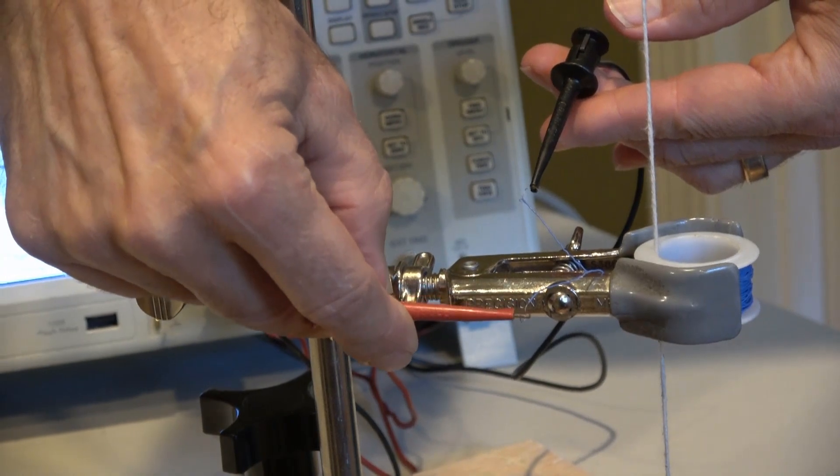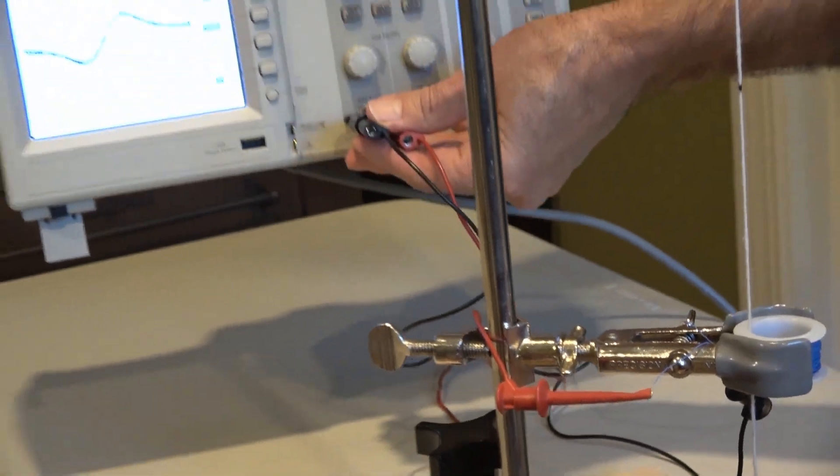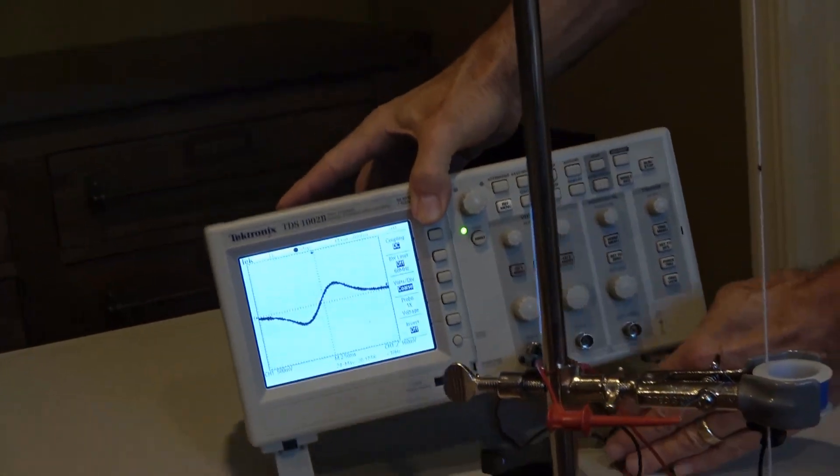The two ends of the wires from that coil are connected to an oscilloscope. There's no battery, no voltage source. We're going to drop a magnet through the coil of wire.